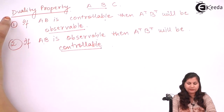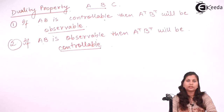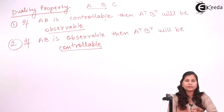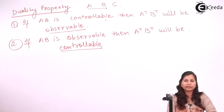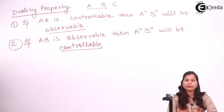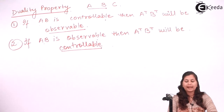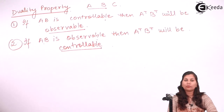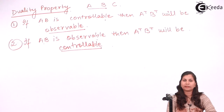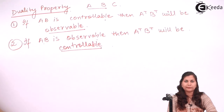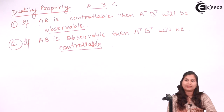In this video, we have studied about two important terms — controllability and observability — related to control systems. We determined how to check whether a system is controllable or not controllable, and whether a system is observable or not observable. I hope this topic is clear to you. Thank you.